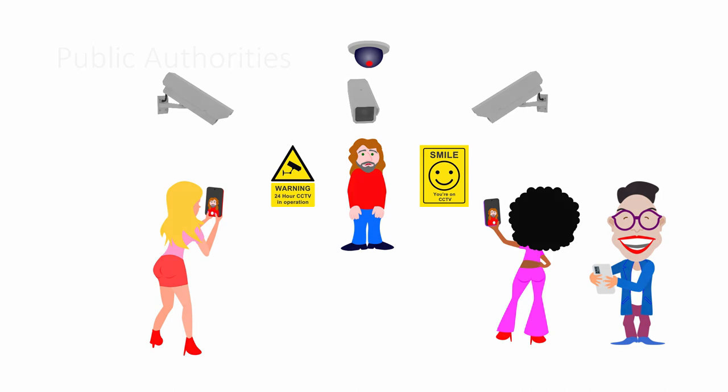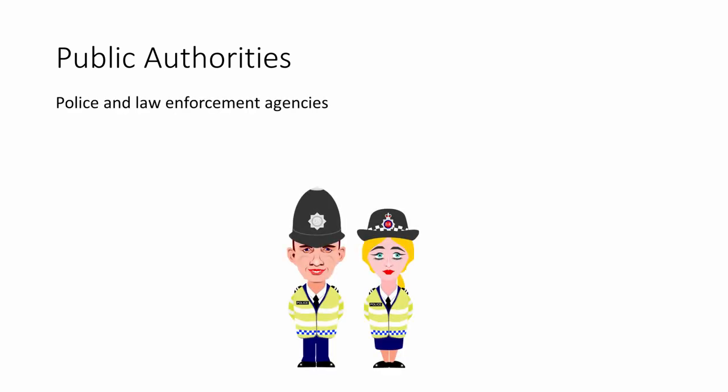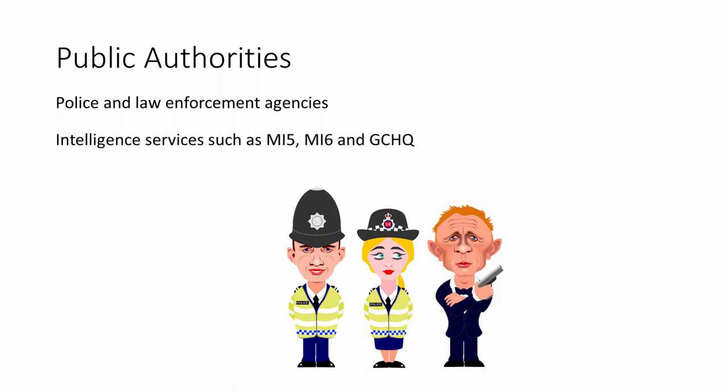Who are those organisations with the power to carry out covert surveillance? As you might expect, they include the police and various law enforcement agencies like the National Crime Agency, the Serious Fraud Office, and the Independent Police Complaints Commission. They include intelligence services like the Security Service, also known as MI5, the Secret Intelligence Service — MI6 — and the Government Communications Headquarters, GCHQ.